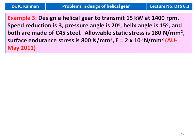Example number 3. This question appeared in the May 2011 question paper. Design a helical gear to transmit 15 kilowatt at 1400 RPM. The speed reduction is 3, pressure angle is 20 degrees, helix angle is 15 degrees, and both the gear and pinion are made of C45 steel. Allowable static stress is 180 N/mm².